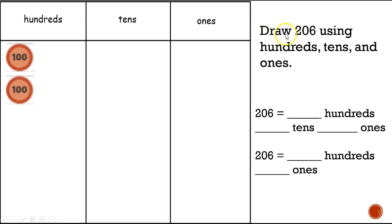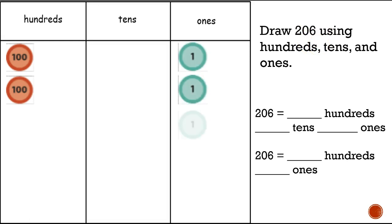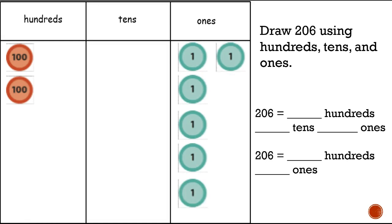Now, how many tens do I need? It doesn't look like I need any tens because there is a zero there. How many ones do I need? I need six. So let's add six ones: one, two, three, four, five, six.